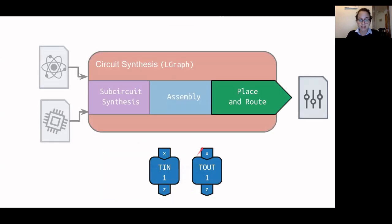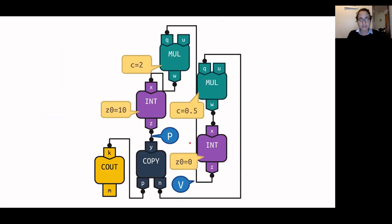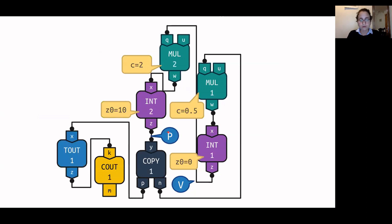The last stage, place and route, assigns blocks in our circuit to blocks on the device and connections in our circuit to digitally settable connections within the device. This stage inserts route blocks when necessary. Taking the assembled circuit from the previous step, after place and route each block has been assigned an instance, and one additional route block — the t-out block — has been inserted to make a connection feasible.